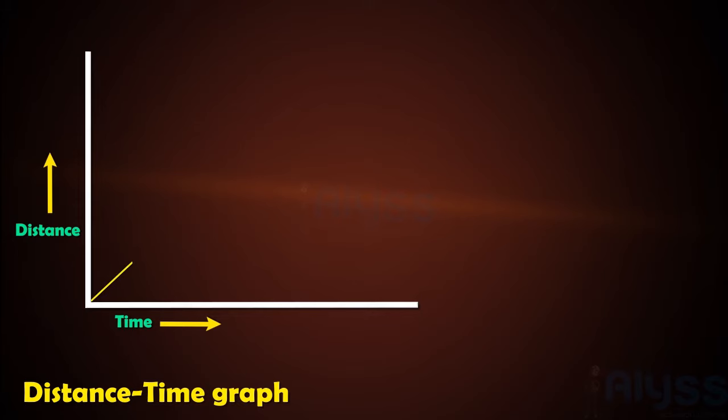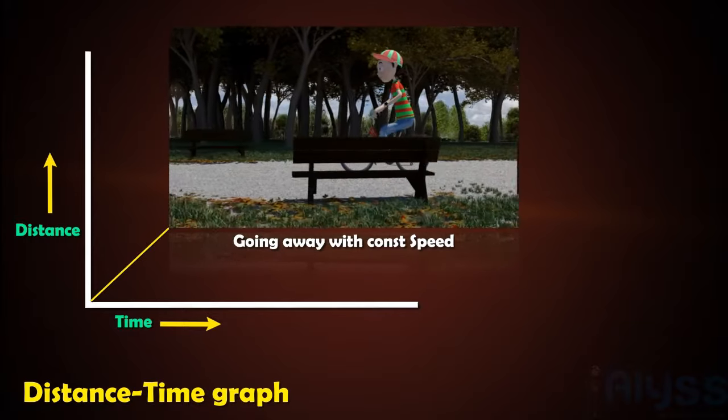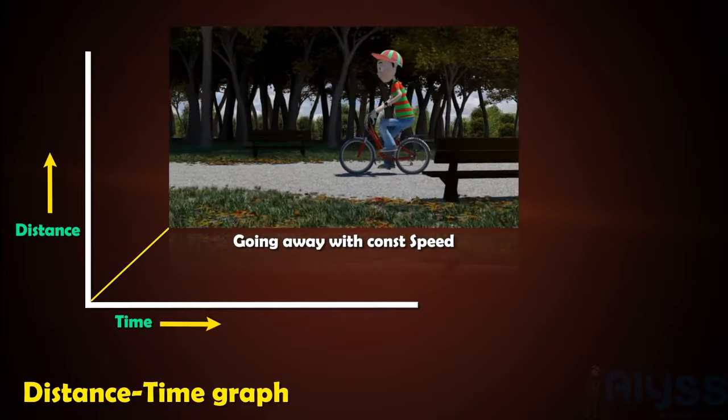If the graph is sloping up, it means the object is going away with constant or steady speed.